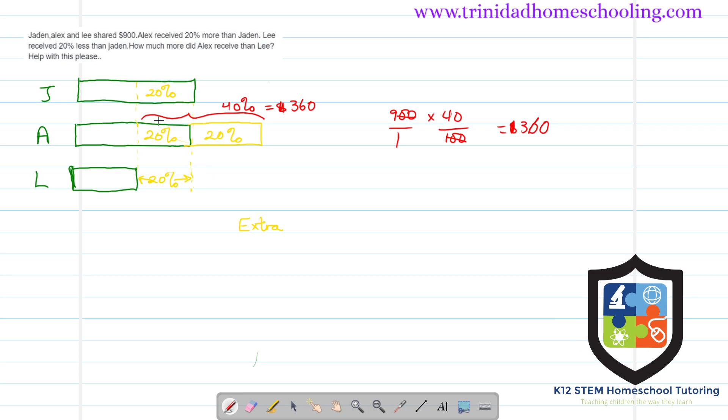Now the extras is what was given to each person apart from what was equally shared between them. So the extras is 60%. Now 60% of 900 is 60 over 100 multiplied by 900 over 1. You'll get $540.